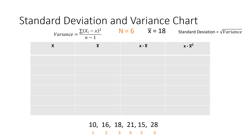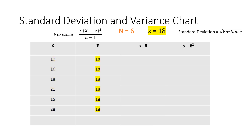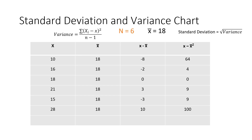The standard deviation and variance chart looks like this. In this first column, we put all of our x values. In the second column, we put our x-bar value. In the third column, we take our x minus our x-bar. And in the fourth column, it will be our x minus x-bar squared.